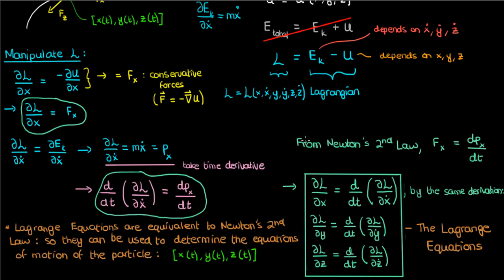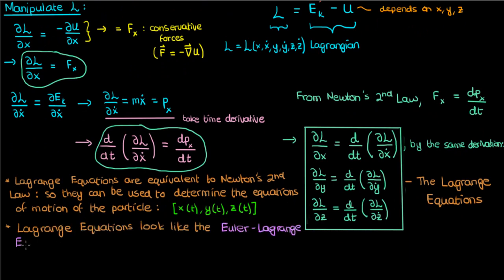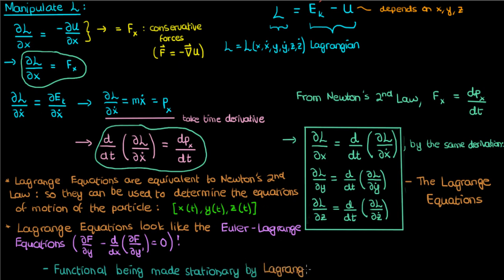There's something else also implicated from these Lagrange equations in x, y, and z. If you look at them you'll see they're pretty much the same as the Euler-Lagrange equations covered in the calculus of variations. The only differences have to do with different variables, but other than that these Lagrange equations look exactly like the Euler-Lagrange equations. Because they strongly resemble the Euler-Lagrange equations, there must be some functional being made stationary by them — that functional is called the action integral, given by S equals the integral from t1 to t2 of L dt.